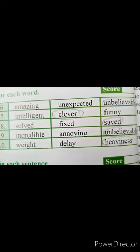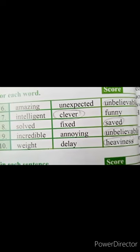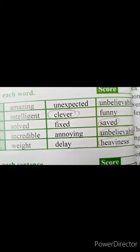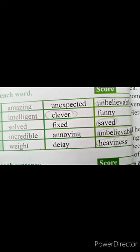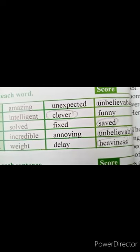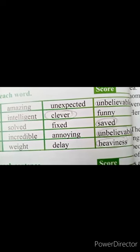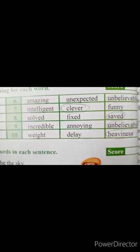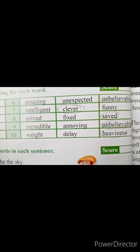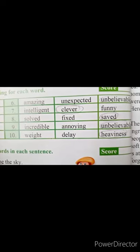Ninth one is 'incredible'. Incredible means ناقابل یقین. Options: annoying and unbelievable. Annoying means غصہ دلانے والا — unbelievable کا بھی مطلب ہے ناقابل یقین. تو incredible اور unbelievable کا ایک ہی مطلب ہے — ہم unbelievable کو circle کریں گے. Tenth one is 'weight'. Weight means وزن. Options: delay and heaviness. Delay means تاخیر کرنا، heaviness means بھاری پن — weight اور heaviness کا ایک ہی مطلب ہے، تو heaviness کو circle کریں گے.